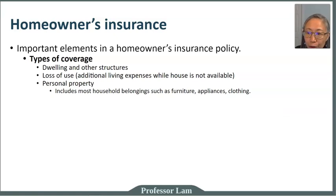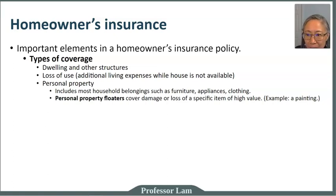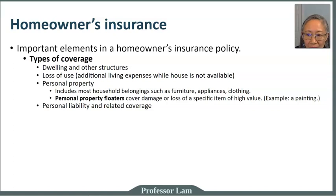The third type of coverage is personal property — your household furniture, appliances, clothing, and so forth. In general you may have, say, fifty thousand dollars that covers replacement of all your personal belongings. You can also add specific items called floaters — for example, an expensive art painting or a wedding ring. The fourth type is personal liability, which covers if someone gets injured on your property. There are also additional customized policies depending on location and region.